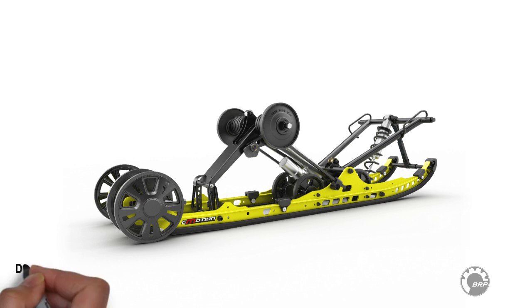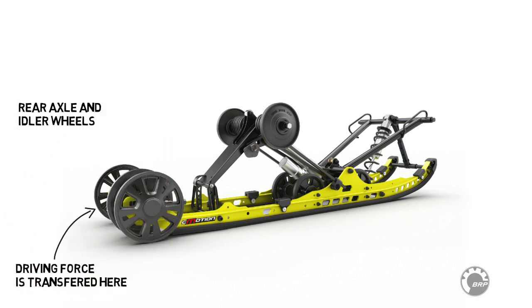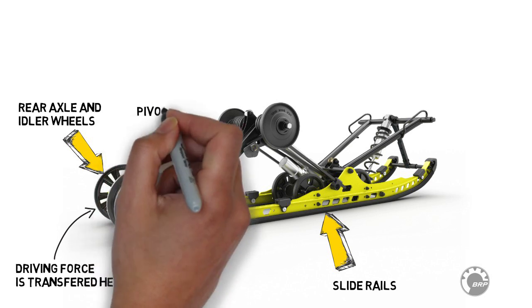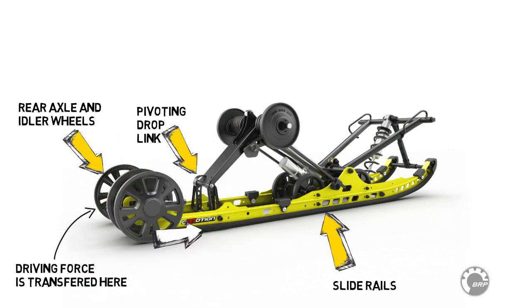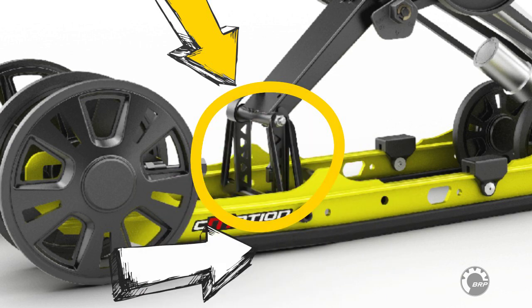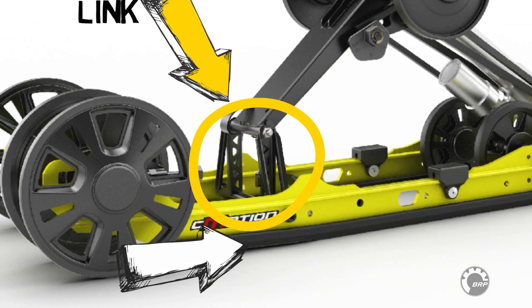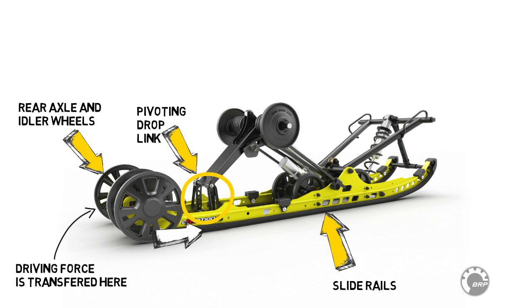All of the force from the track transfers to the rear suspension through the rear axle and idler wheels. From the rear axle, force moves forward through the slide rails. Since the rear arm of the rear suspension has a pivoting drop link between the rear arm and the slide rail, no horizontal force can push the chassis through the rear arm.